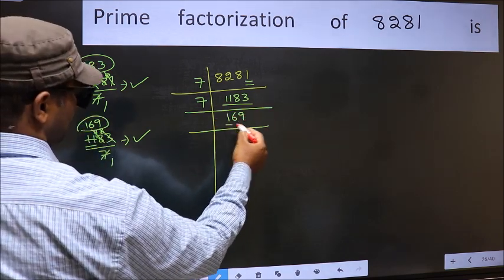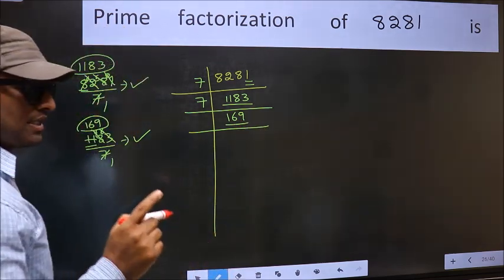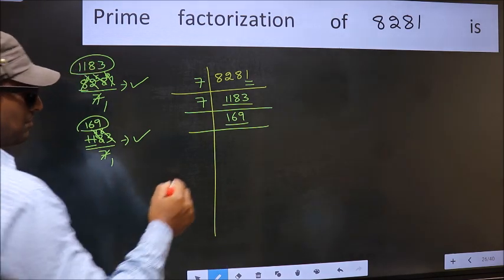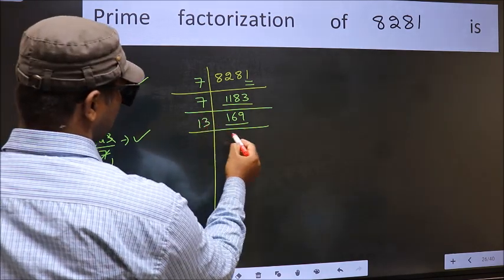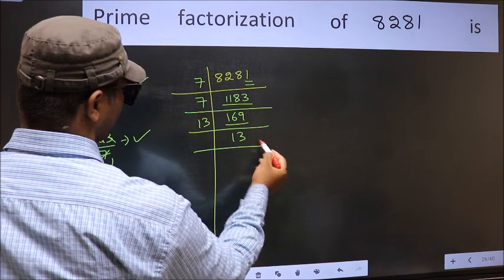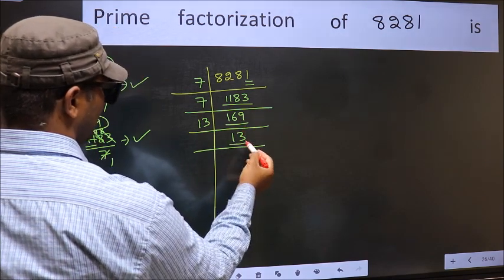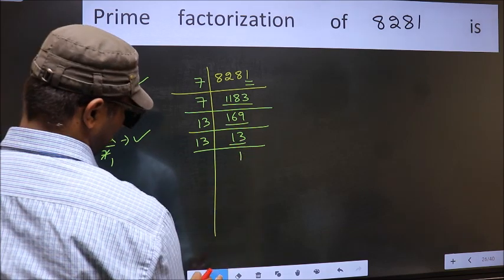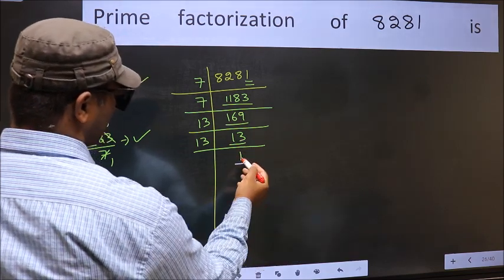Now we have 169. Always remember 13 into 13 is 169. That is 13 times 13 is 169. Now we have 13. 13 is a prime number so 13 once is 13. So we got 1 here.